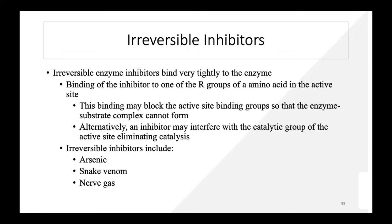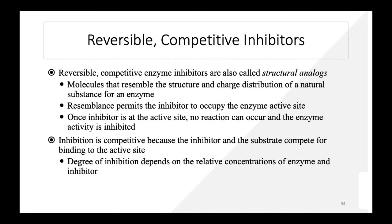Irreversible enzyme inhibitors bind very tightly to the enzyme, blocking the active site so that the enzyme-substrate complex cannot form. Alternatively, they may interfere with the catalytic group of the active site, eliminating catalysis. Examples include arsenic, snake venom, and nerve gas — once inside the body, all enzyme activity is inhibited instantly.